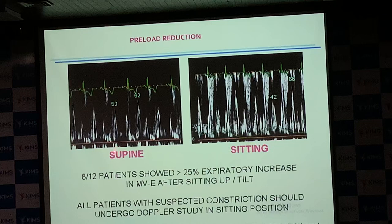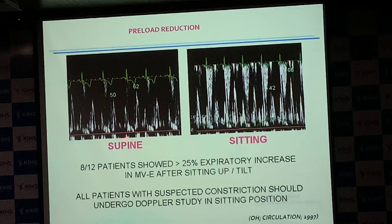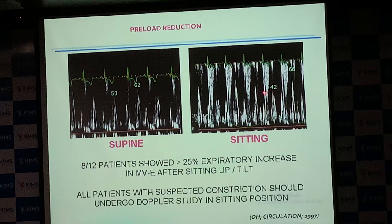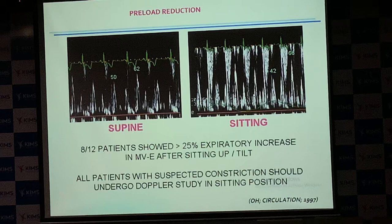There is a demonstration showing: in supine study you may not find expected mitral valve changes in a constrictive pericarditis patient with heart failure; when made to sit up, the mitral valve study shows the classical change — increasing mitral valve E-wave velocity during expiration.